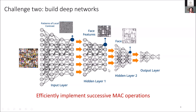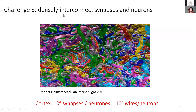The third challenge is that we need to densely interconnect these layers of synapses and neurons. Today in deep neural networks, because of the limitations of GPUs, there are about 100 synapses per neuron. But in the cortex, you have 10 to the 4 synapses per neuron. This image is a 3D reconstruction of the retina — each color is a wire that connects neurons together — and the brain achieves this high density with a crazy 3D connectivity with very complex wires. With our 2D electronics, it would be very difficult to do that, so we need new approaches.